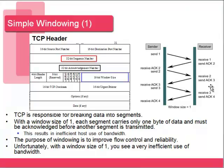One thing to note: the window sizes in the book examples are very small. In actual packets, window sizes are much larger — in the thousands. In this example a window size of 1 means we can only send one segment at a time before being acknowledged. Relating this to humans communicating, it would be like saying one word at a time and waiting to be acknowledged before saying the next word — which would make communication take a very long time.